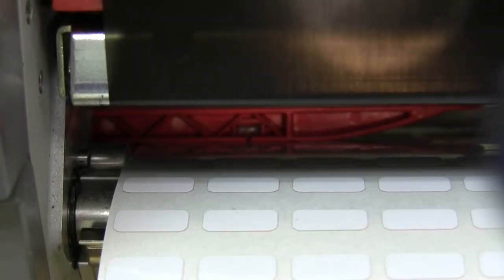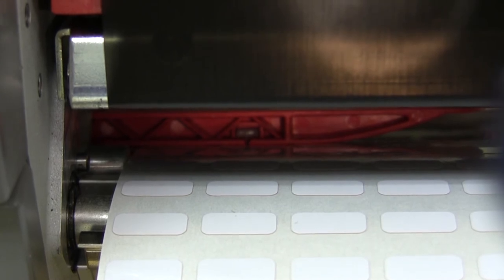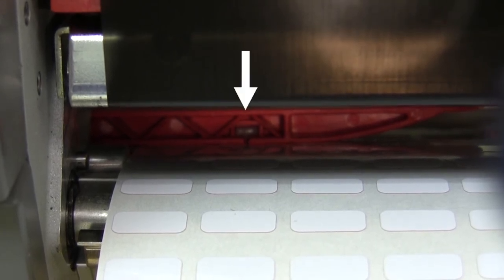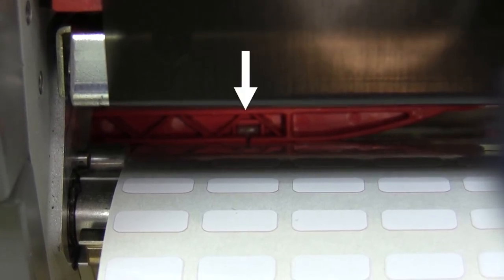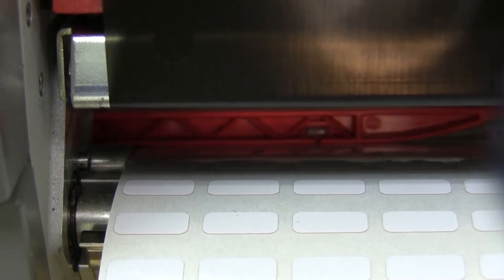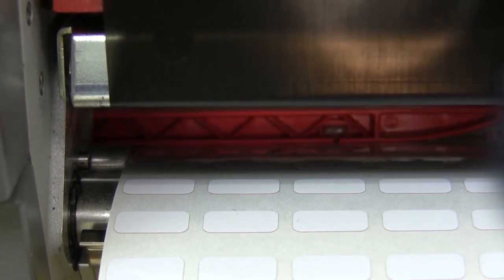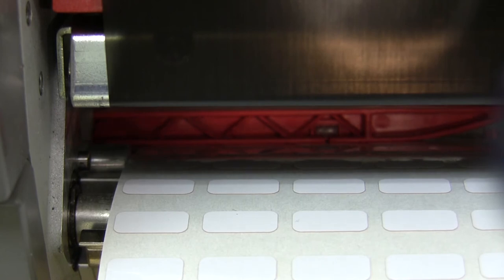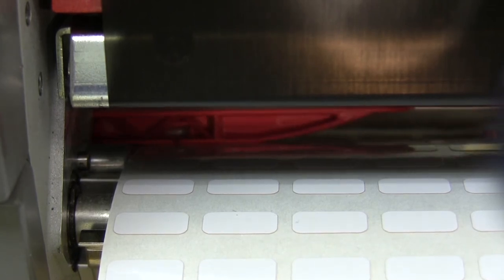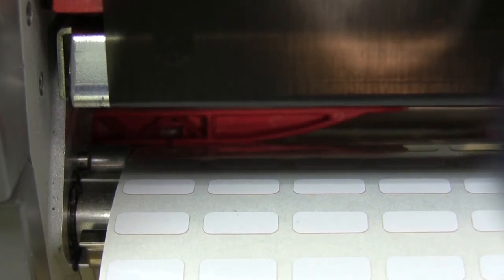Before we print we have to make sure the sensor is in the correct position. The labels are underneath the sensor bar and the actual sensor is the diode here that you see with the arrow. It can be moved left and right by grabbing the small tab that is part of the sensor bar assembly and we just want to make sure that the diode is over one of the labels.